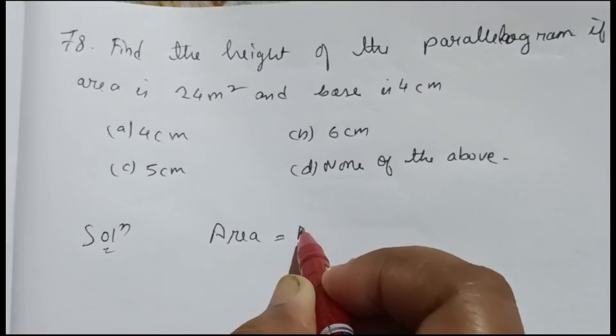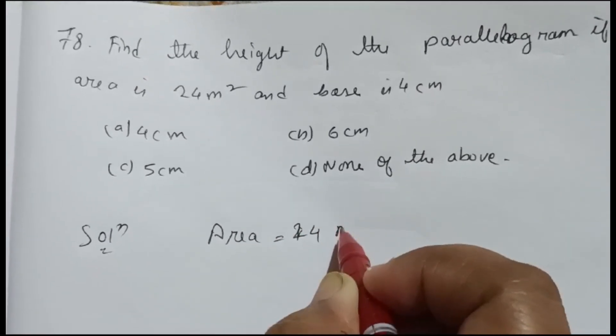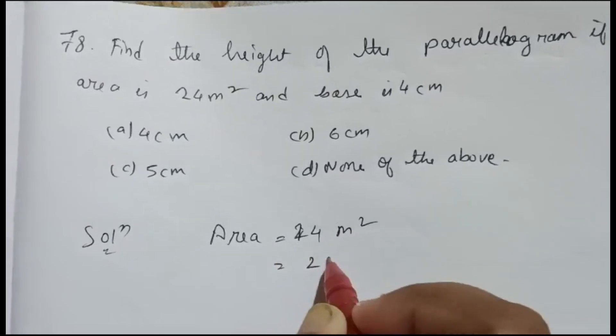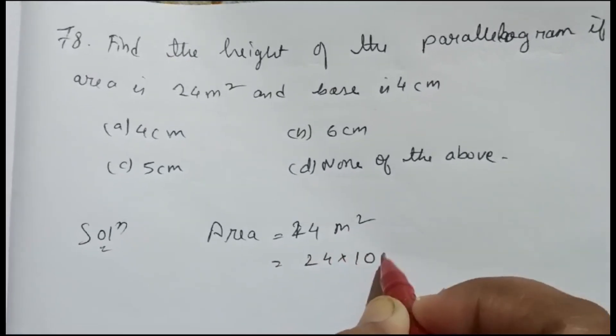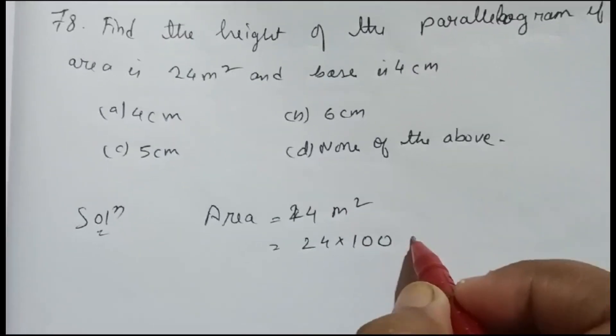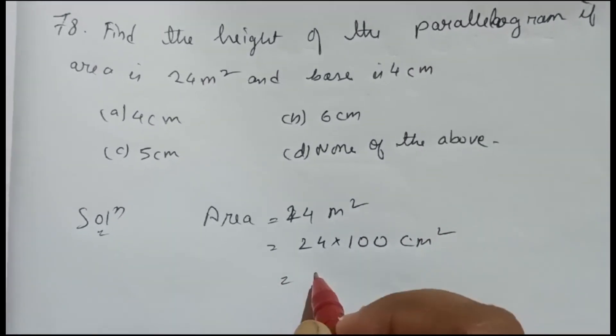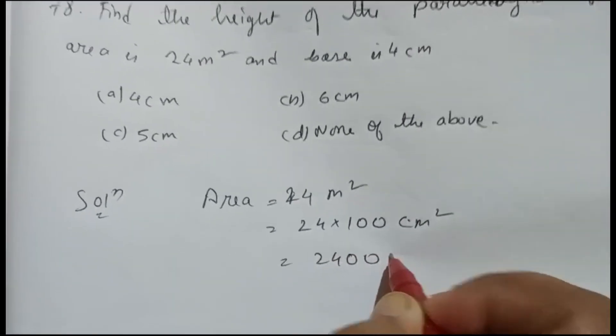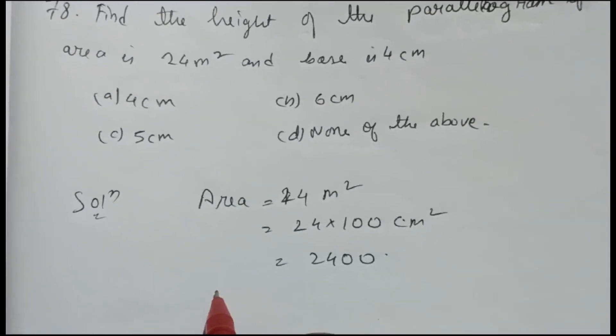So we have to change it into centimeter. If you multiply with 100, then we can transfer it into centimeter: 24 hundred. Then area's formula is base into height, 2400.